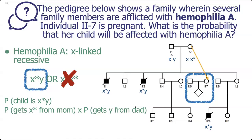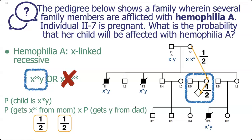We don't know for sure if individual 2-7 is a carrier, so we go back one generation and calculate the chance that individual 1-2 passed on the X with the Haemophilia allele to her daughter — that's a one-half chance, since there are two options: a normal X or the mutant X. Then we calculate the chance that individual 2-7 passed it to her child, which is again one-half. Drawing our equation boxes, we multiply these together: the allele must go from 1-2 to 2-7, and then from 2-7 to the fetus.